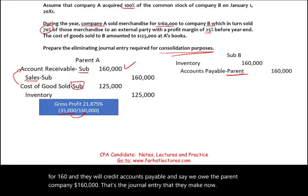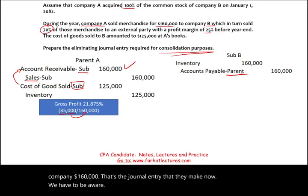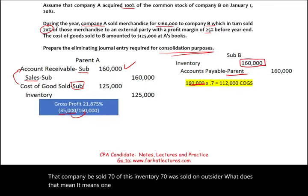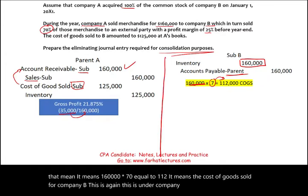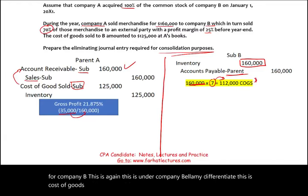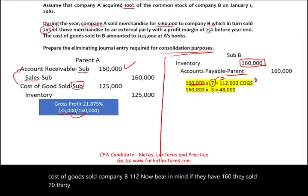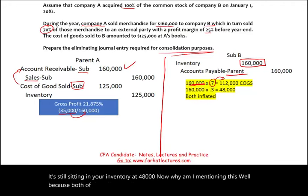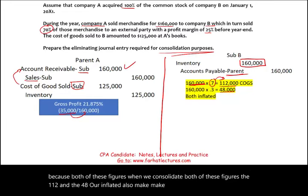Company B sold 70% of this inventory to an outsider: $160,000 × 70% = $112,000, which is Company B's cost of goods sold. The remaining 30% — $48,000 — is still sitting in their inventory. When we consolidate, both of these figures, the $112,000 cost of goods sold and the $48,000 ending inventory, are inflated because they include profit marked up by the parent company.